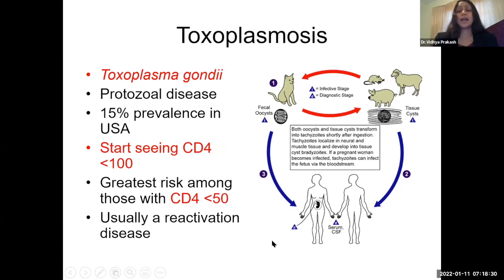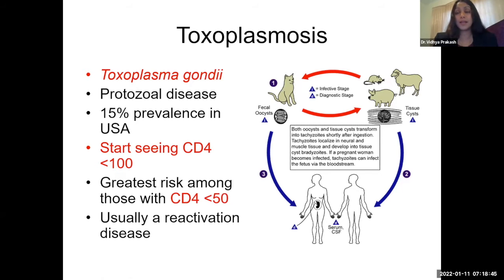Toxoplasma gondii is a protozoal disease. In the United States, prevalence is 15%. Think PCP at CD4 less than 200; think toxoplasmosis at CD4 less than 100, with greatest risk at less than 50. The life cycle involves oocysts excreted in cat feces; through fecal-oral contact, humans ingest oocysts, which change into the rapidly replicating tachyzoites. These can infect the fetus in pregnant patients. The organism then embeds itself in tissue — including CNS — as bradyzoites. This is usually a reactivation disease in immunosuppressed patients like AIDS patients.